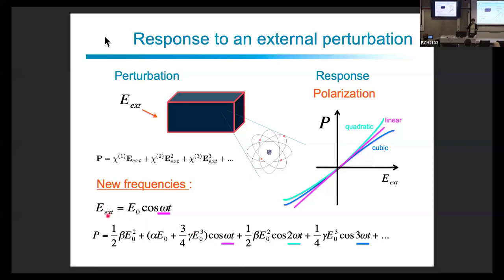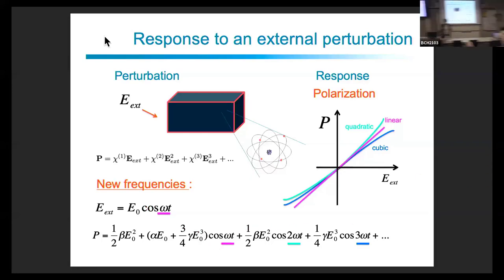The idea of the non-linear regime is that we can create new frequencies. The external field is an oscillating cosine at frequency ω. When you plug this into the polarization expression, you get a term that does not depend on time (proportional to the square of the field amplitude), a term at ω, a term at 2ω, one at 3ω, and so on. The non-linearity of the medium creates new frequencies: you start with ω and end up with 2ω, 3ω, etc.